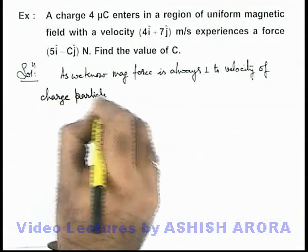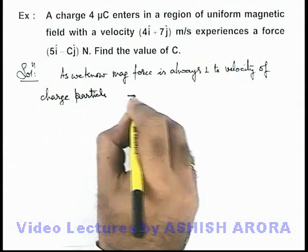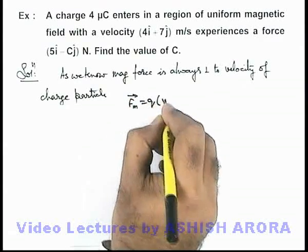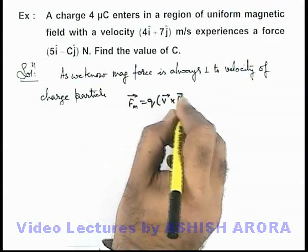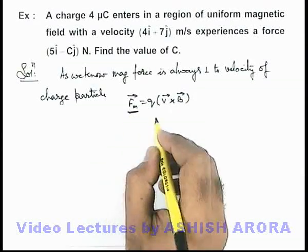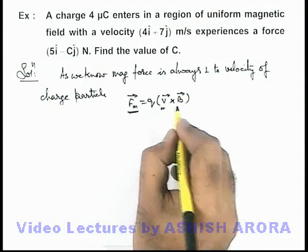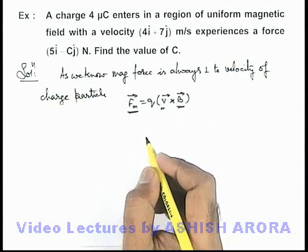As we know, the value of magnetic force vector is given as q multiplied by v cross B. So in this situation, the direction of force vector is normal to both velocity vector and magnetic field vector.